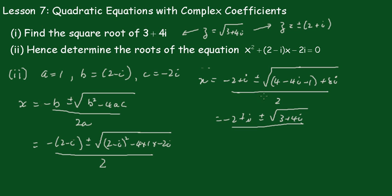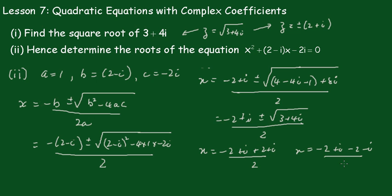We've worked that out before — the square root of 3 plus 4i is plus or minus (2 plus i), all over 2. So x equals minus 2 plus i plus (2 plus i) over 2 in the first case, and x equals minus 2 plus i minus (2 plus i) over 2 in the second case.